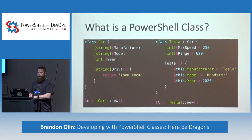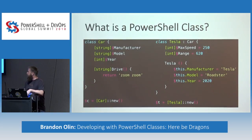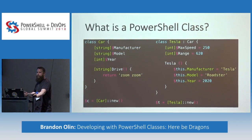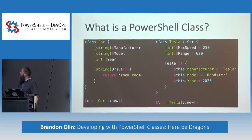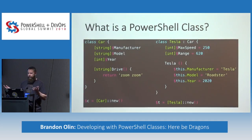Here are two examples of what a really basic class is. On the left-hand side, we have a class that defines what a car looks like — a couple basic properties: manufacturer, model, and year — and a method called 'drive'. At the very bottom is how you would instantiate that class with the new method. On the right-hand side is more advanced stuff: code reuse. I create a new class called Tesla that inherits from the car class, defines a couple new properties like max speed and range, and sets those in the default constructor.